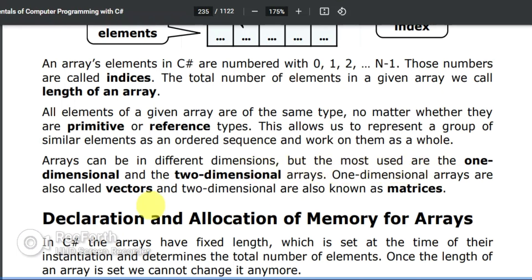Arrays can be in different dimensions, but the most used are the one-dimensional and two-dimensional arrays. One-dimensional arrays are called vectors.